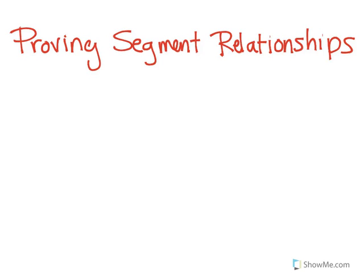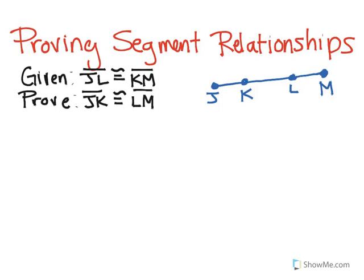In this video, we're going to talk about how to prove segment relationships. We have this picture here, and our given information is that JL is congruent to KM — so basically from here to here is the same as from here to here. And it wants us to prove that JK is congruent to LM.